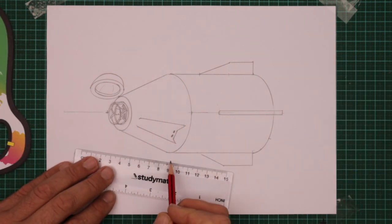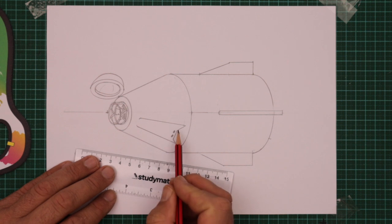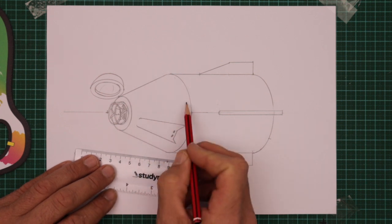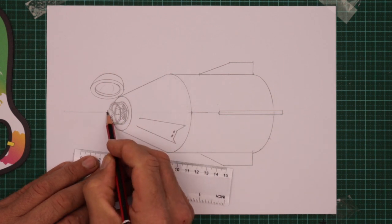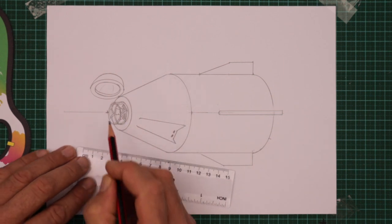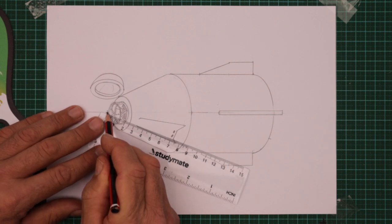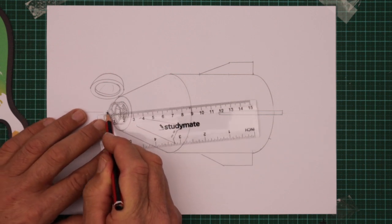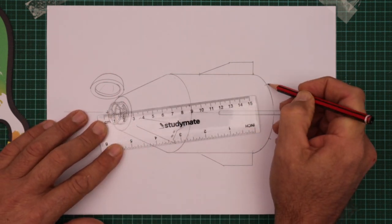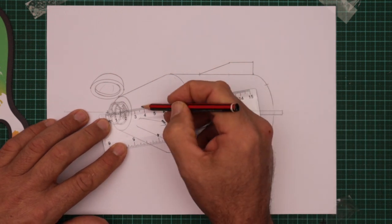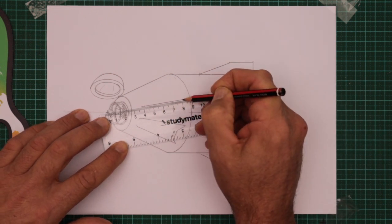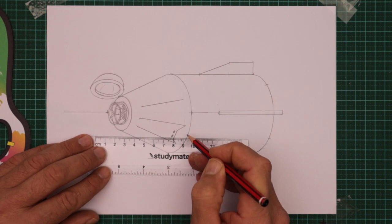Now we'll draw the Super Draco motors, the rocket engines spread around the outside of the capsule. We'll draw one at the top. First, put a little cross or a mark out the front of the capsule. Imagine a line from that mark towards roughly there at the back. Draw a line on the side of the capsule. That's the first one.